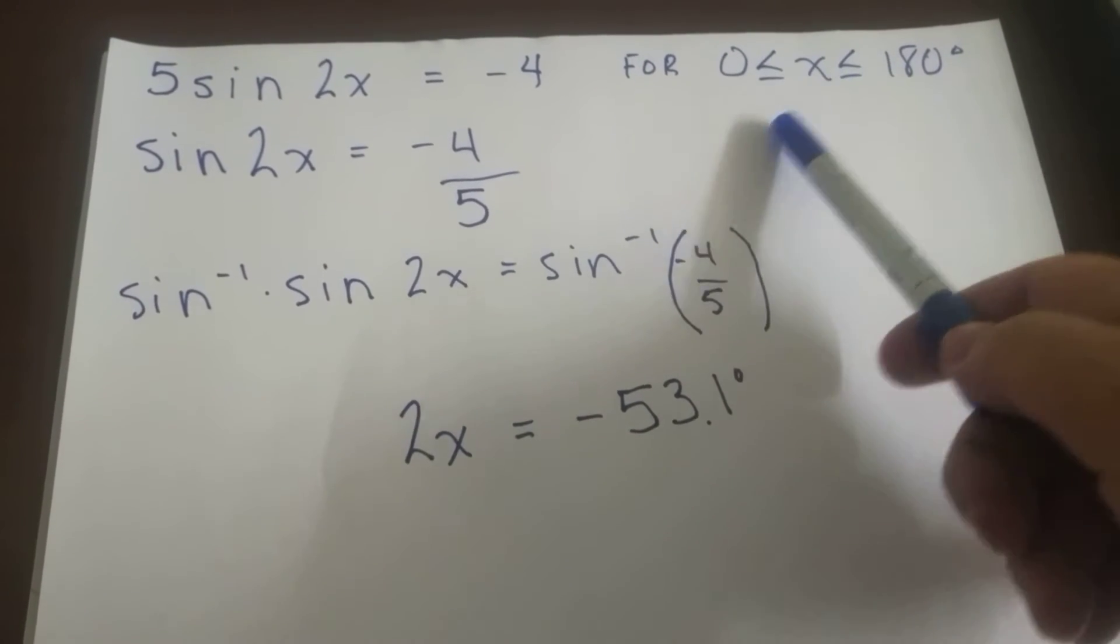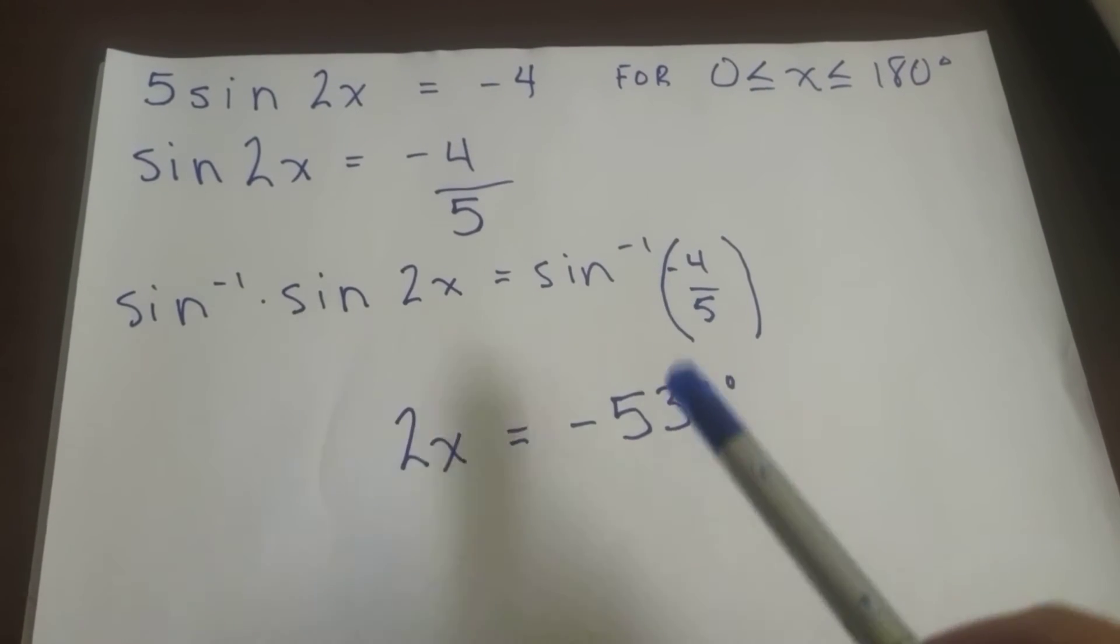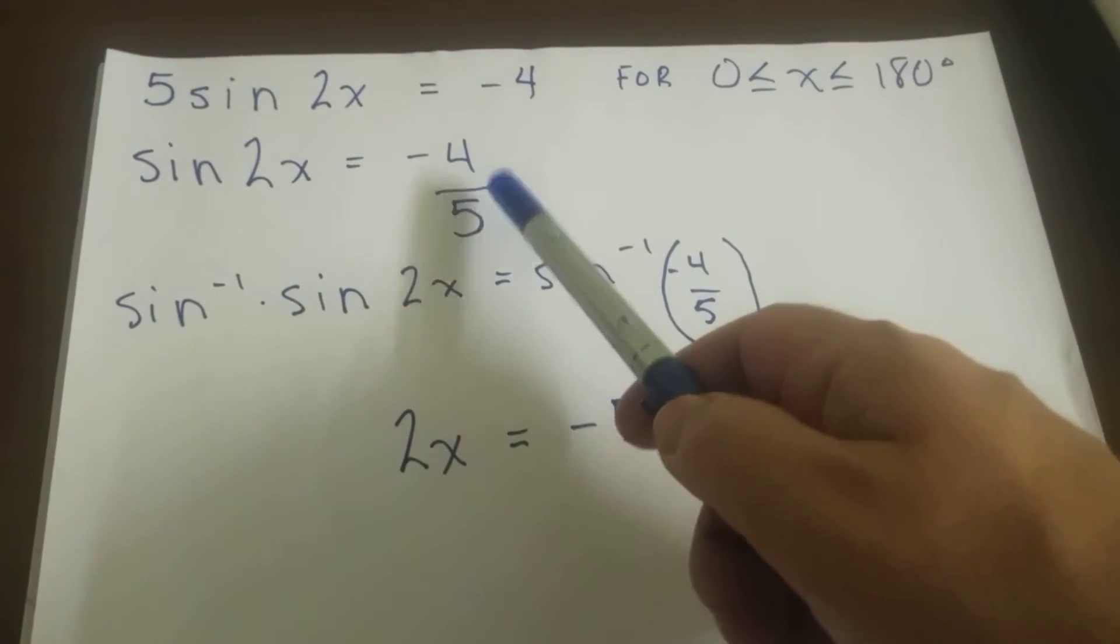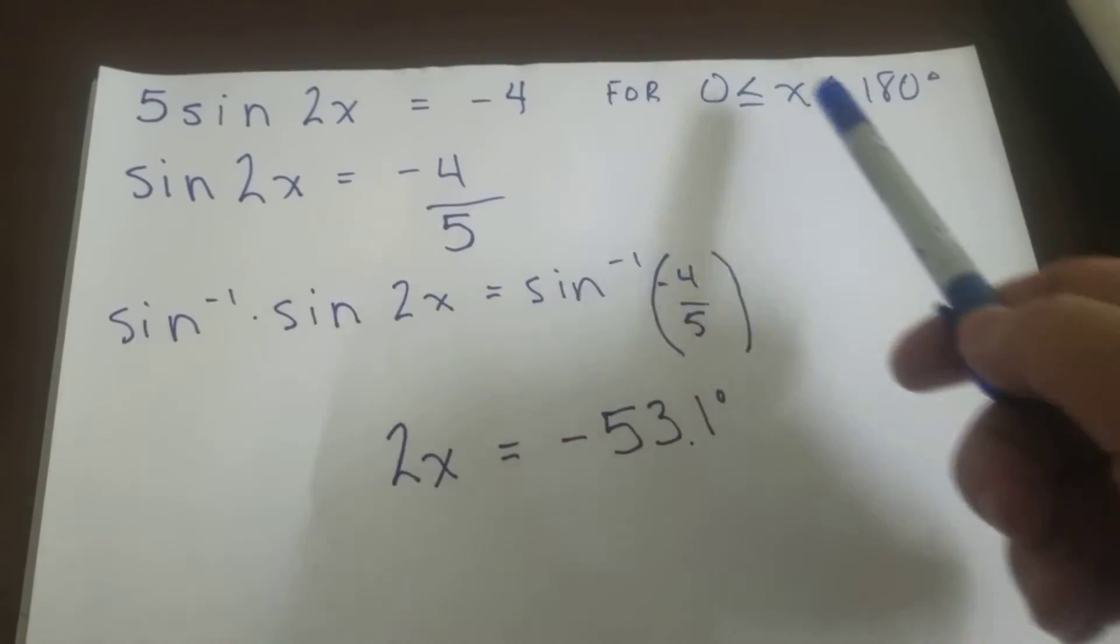The more difficult part is trying to find the values of the curve when it goes through negative 0.8 or negative 4/5, between 0 and 180 degrees.